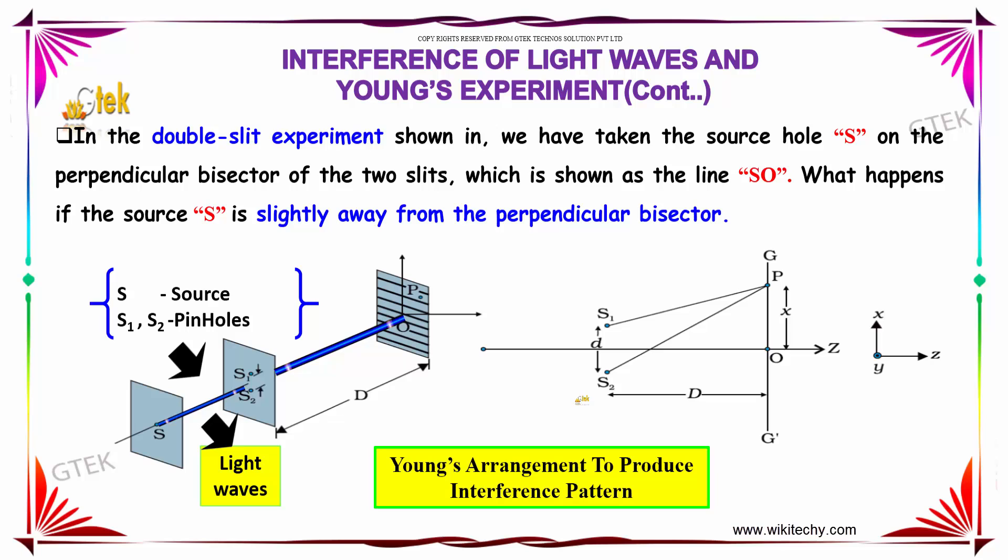In the double slit experiment shown, we have taken the source hole S on the perpendicular bisector of the two slits S1 and S2, shown as the line SO. What happens if the source S is slightly away from the perpendicular bisector?